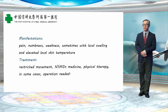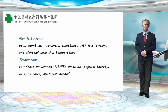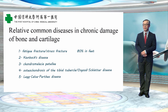The manifestations may be pain, numbness, weakness, and sometimes local swelling and elevated local skin temperature. The treatment includes restricting movement, giving oral medicine and physical therapy, and for some cases we can perform operation. This next section shows the relative common diseases in chronic damage of bone and cartilage.